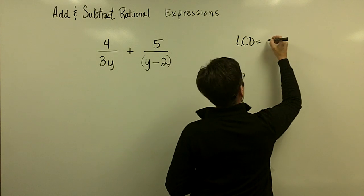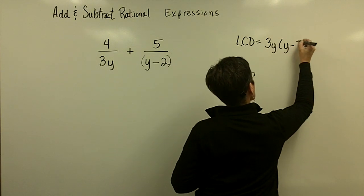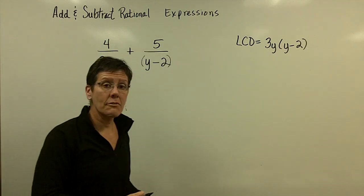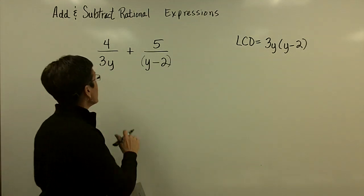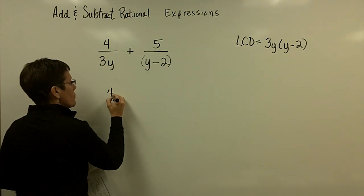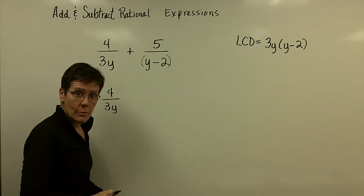I hope you've noticed this: I tend to write my LCD off to the side so that I can see it. It's a visual for me to see. And so this fraction, the 4 over the 3y, is missing which part over there? That y minus 2.